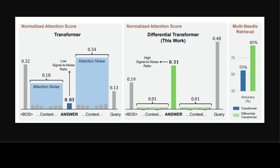So what are the benefits here? Improved performance in language modeling and various downstream tasks; enhanced ability to retrieve key information. It also mitigates hallucination in question answering and text summarization. It is more robust to order permutation in in-context learning, or ICL, and it reduces activation outliers. So the Differential Transformer is an advanced architecture that builds upon the Transformer model. By introducing a differential attention mechanism, it reduces attention noise and improves performance in various NLP tasks, making it a promising foundation for large language models.